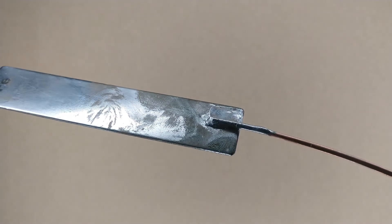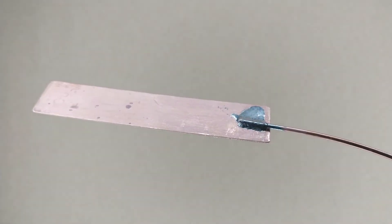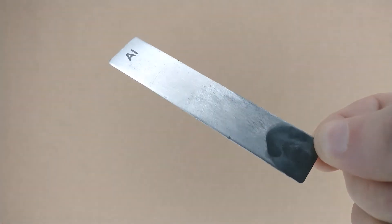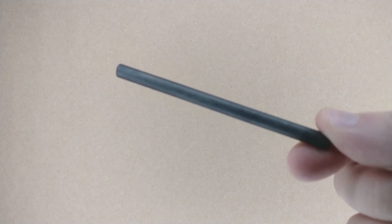Pure iron will solder. Pure copper will solder. Pure aluminum will not solder. Pure carbon in the form of graphite will not solder.